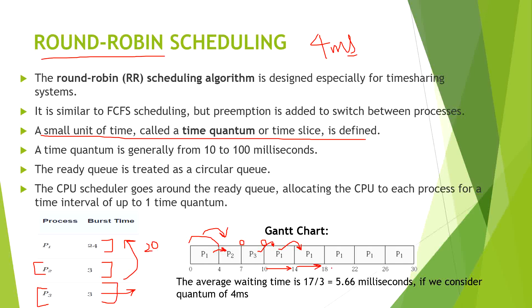The system continues to check whether to hand off to another process, but since only P1 remains it executes P1 again each time — at 22ms, 26ms, and finally at 30ms P1 completes. The total completion time of 30ms equals the sum of all burst times: 24 plus 3 plus 3 equals 30.